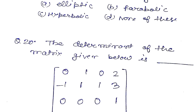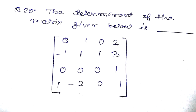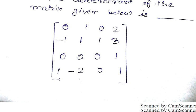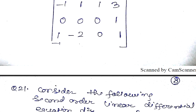Question number 20. The determinant of the matrix given below is. First row: 0 1 0 2. Second row: minus 1 1 1 3. Third row: 0 0 0 1. Fourth row: 1 minus 2 0 1.